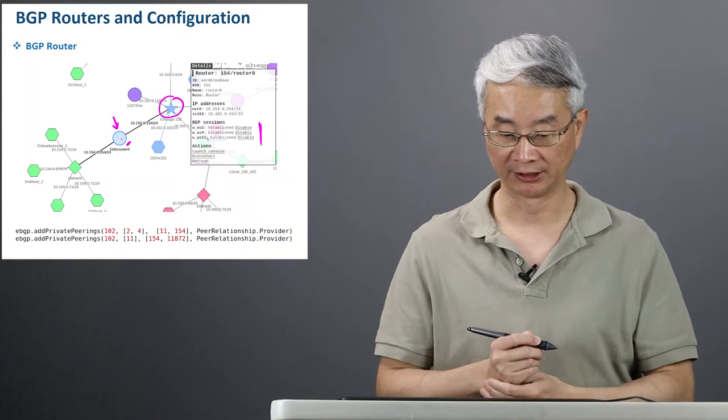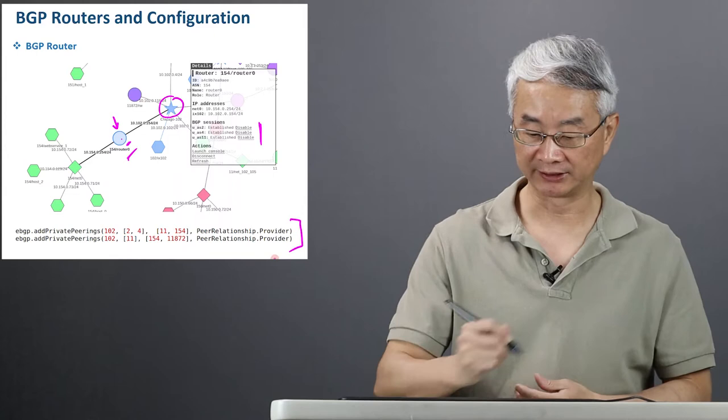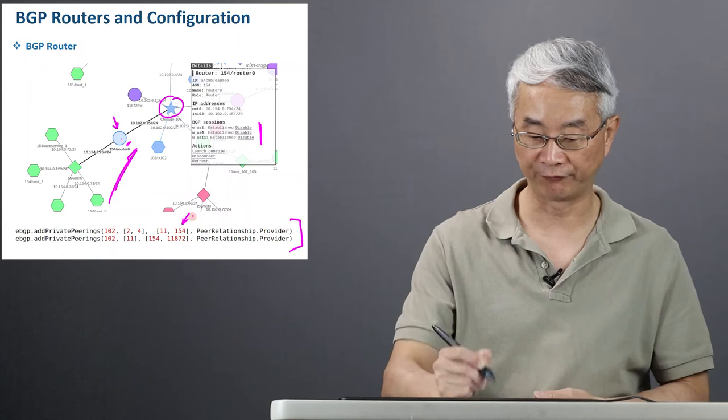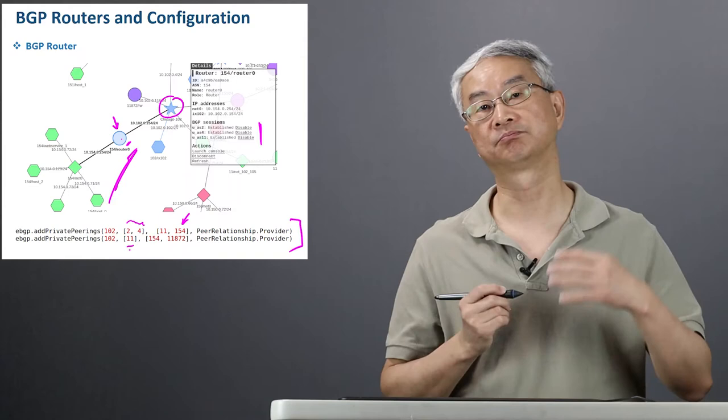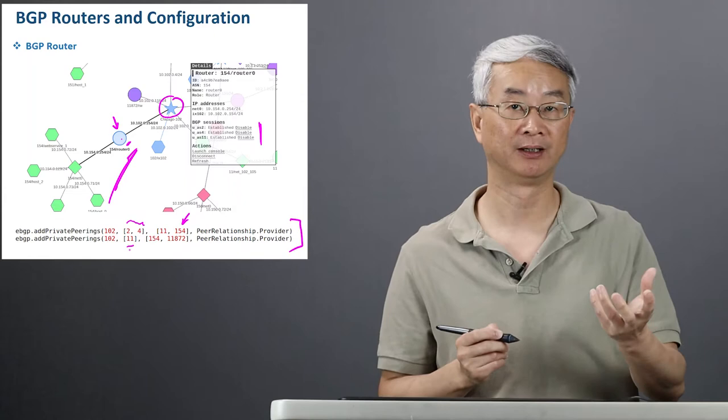These three are the transit autonomous systems. You peer with them and get internet service from them. In the code, autonomous system 154 peers with AS2 and AS4, and also peers with AS11. So this is a multi-homed autonomous system — it has three internet service providers. That's very common for redundancy: if you lose the connection from one service provider, you have another one as a backup.